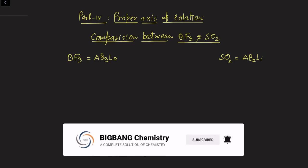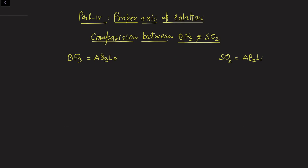The meaning is: when there is a lone pair of electrons in a molecule, is there any change in the proper axis of rotation or not? For understanding the presence and absence of the proper axis of rotation, and for comparing BF3 and sulfur dioxide, we must first know the shape of each molecule.